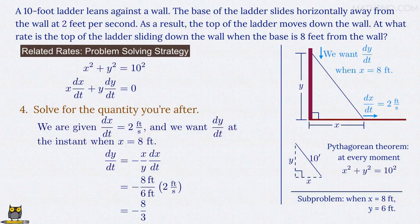Negative 8 over 6 times 2 is negative 8 over 3. And looking at units, the feet in the numerator and denominator here cancel, and so we're left with feet per second, as we expect. In fact, it's the same units that dx/dt has. And that's it. Our final answer is dy/dt equals negative 8 thirds feet per second.